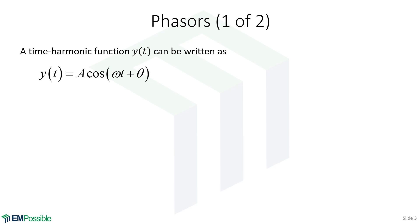Let's talk about phasors. Anytime we're using phasors, we're talking about functions that are oscillating harmonically — that means they're following a sine or cosine. I've defined a function y of t, varying as a function of t, written as an amplitude times a cosine. Inside that cosine, there's a frequency omega multiplying time plus a phase.